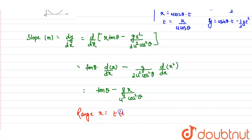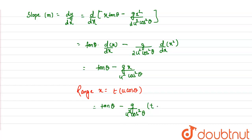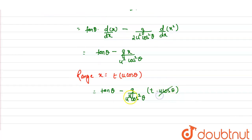Now the range x = t·u·cosθ. Therefore we can write the slope equation as: m = tanθ − [g/(u²cos²θ)]·(t·u·cosθ). One factor of u·cosθ cancels out, giving: m = tanθ − [g/(u·cosθ)]·t.